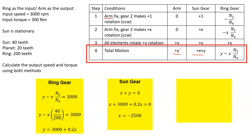Substituting into the equation, we solve for X and get X = -2,500 rpm. That negative value means it's going clockwise — counterclockwise is positive, clockwise is negative. That is the Sun gear's motion without considering relative motion. Knowing the X value, we can find Y: plugging back into either equation gives Y = +2,500 rpm, so the arm is going 2,500 rpm counterclockwise. That is our output.